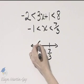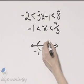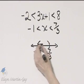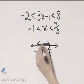I'll place a parenthesis. Because of that strictly less than, a parenthesis here. And I'll shade between. There's the graph.